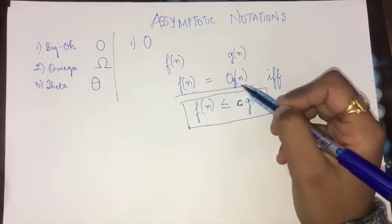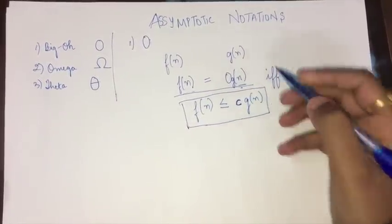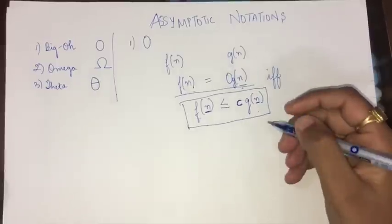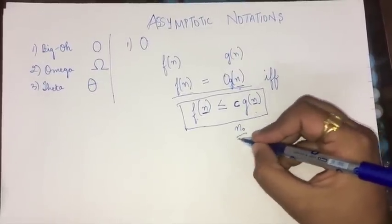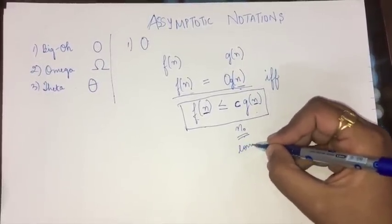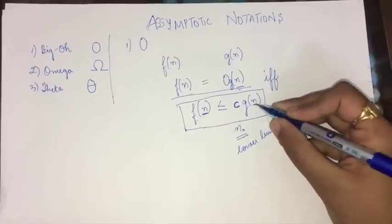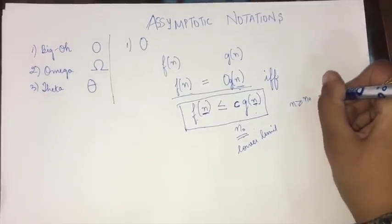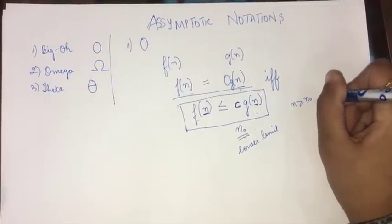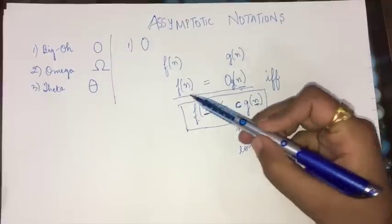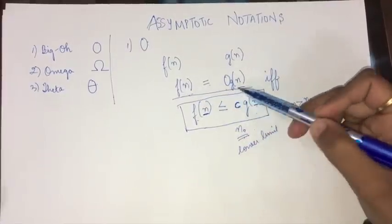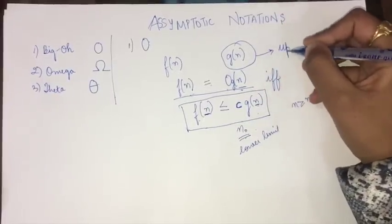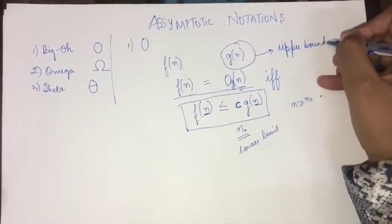If this condition is fulfilled, we can say that function f(n) is Big O of function g(n). The input values n will be greater than or equal to a particular n₀, where n₀ acts as a lower limit — so n ≥ n₀. If f(n) is Big O of g(n), then g(n) is called the upper bound on f(n).